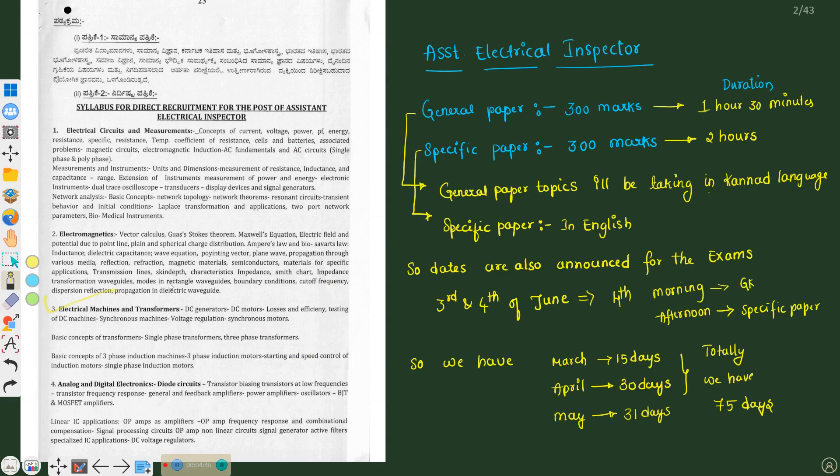If you talk about electrical machines, we know that DC machines and AC machines. In DC machines we have DC generator, motor, losses and efficiency related with them, and testings of DC machines. Synchronous machines - alternator and synchronous motor. If you talk about transformer, single phase transformer, three phase transformer and basic concept of three phase induction motor, starting and stopping, speed control of induction motor, single phase induction motor.